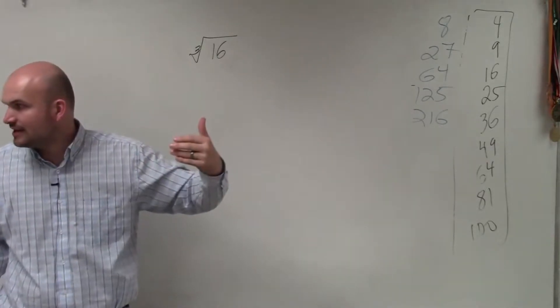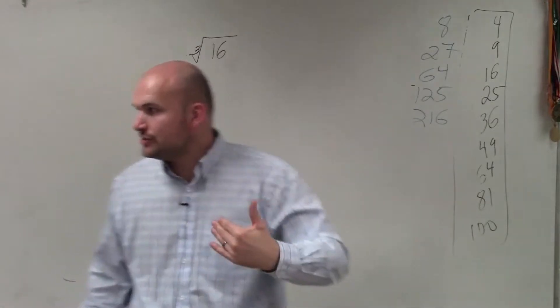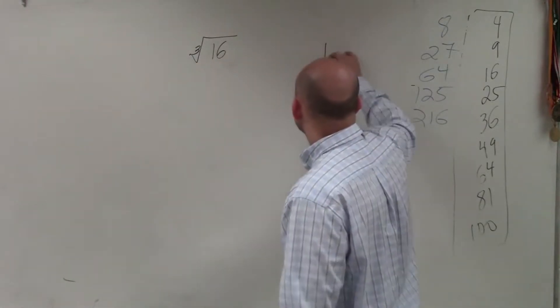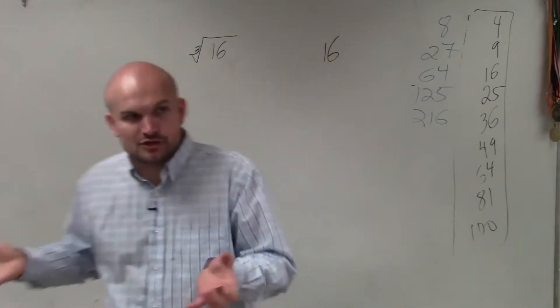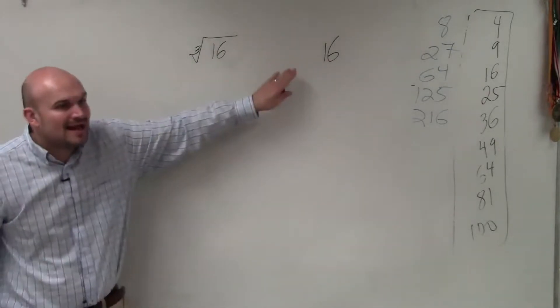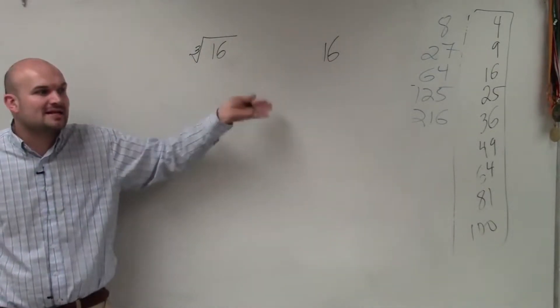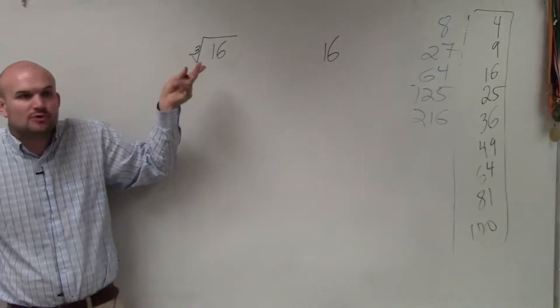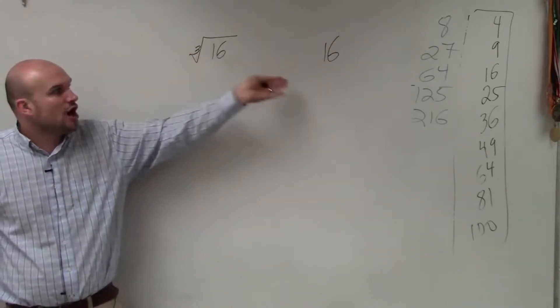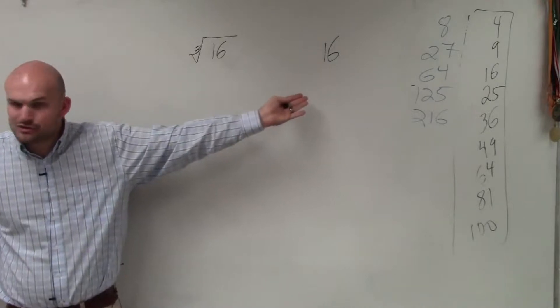So my recommendation to you is, when you're doing this, you can use the factor tree. Because guys, it doesn't matter. If you have your radicand, use a factor tree to write it as prime factors. Because it doesn't matter if it's the cube root, the fifth root, the sixth root. You're always going to want to come from the same factor tree.